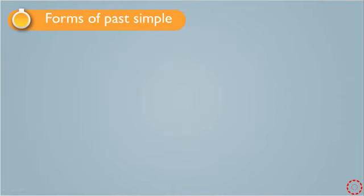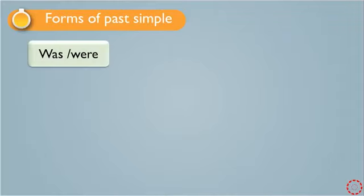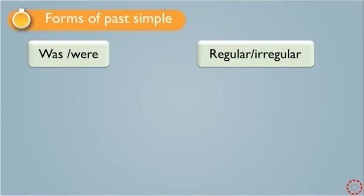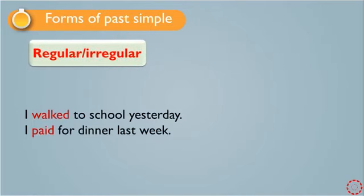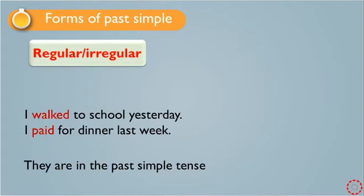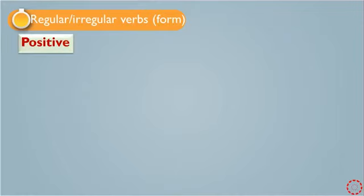The forms of past simple: we generally have two forms — was/were form, and regular and irregular form. Today we are going to practice the regular and irregular form — that is, past simple with the main verb. Look at these two examples: 'I woke up to school yesterday' and 'I paid for dinner last week,' both in the past simple tense.